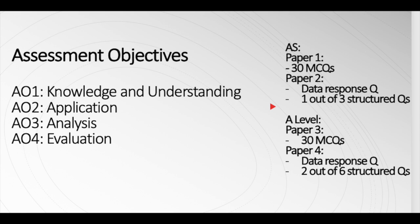In A-levels, there are going to be two papers to be solved. Paper 3 has 30 MCQs, all have to be done without any choice. Paper 4 has one data response question again and six essay-based questions out of which two are to be solved.